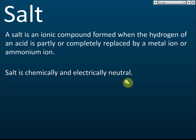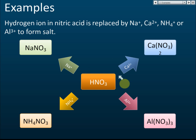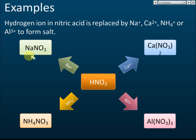Let's look at some examples. Take nitric acid, HNO₃. It has a hydrogen ion. If that hydrogen is replaced by a sodium ion — sodium being a metal — it becomes sodium nitrate, which is a salt. If the hydrogen is replaced by calcium ions, it becomes calcium nitrate, Ca(NO₃)₂, which is also a salt.